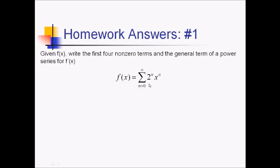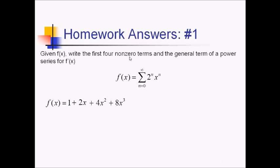For number one, we want the first four non-zero terms and general term of a power series for f prime of x, and this is f of x right here. So let's start by writing out f of x. If we plug in zero to begin with, that's going to be 1 for our first term, then plugging in one, that's going to be 2x. We're basically just multiplying by 2x each time. So 4x squared, 8x cubed, and then 16x to the fourth would be the next one. They said the first four non-zero terms, so when we take the derivative, this one's going to go away, so we need one more term. And then the general term is just this term right here.